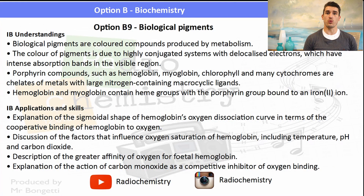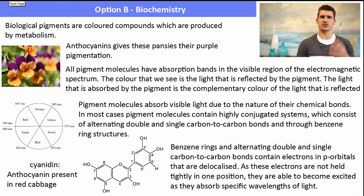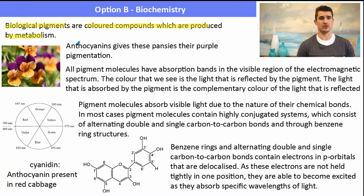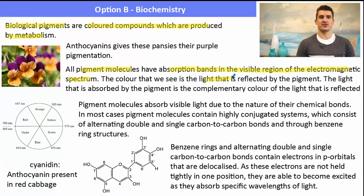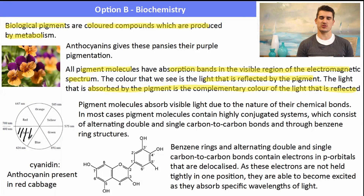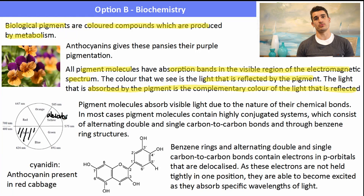A biological pigment is a colored compound produced from metabolism. For example, anthocyanins give pansies their purple color and are a biological pigment. All pigment molecules have absorption bands in the visible region of the electromagnetic spectrum — that's what gives them their color. The light we see is the color that is reflected by the pigment, so what's absorbed is the complement of that color. For pansies, which appear violet, the pigment is absorbing yellow and reflecting violet.